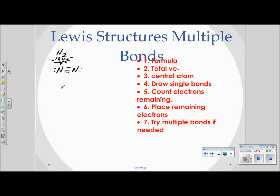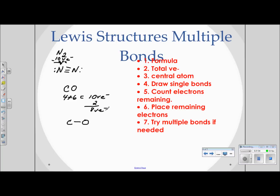Let's try carbon monoxide, CO. Carbon has four valence electrons and oxygen has six, giving us ten total valence electrons. We draw C–O with a single bond, which places two electrons, leaving eight valence electrons still to be placed.